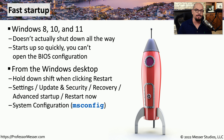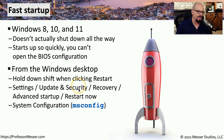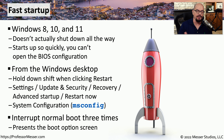There are a number of different ways to bypass this fast startup process. One is that you could hold down the Shift key when clicking Restart in the Windows desktop. Or you can enable and disable this capability from Settings, Update and Security, Recovery, Advanced Startup, and then Restart Now. There's also a system configuration setting under MS Config. But if you don't have access to the desktop, you can simply interrupt the normal boot process three times. After that third interruption, Windows disables the fast startup process and allows you access to the normal boot process.